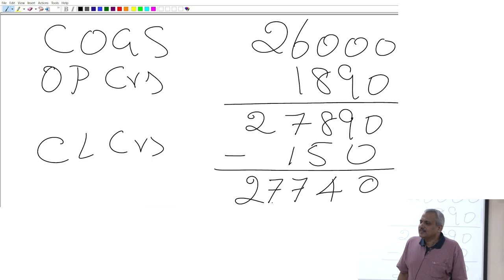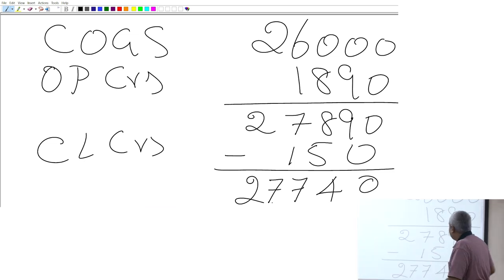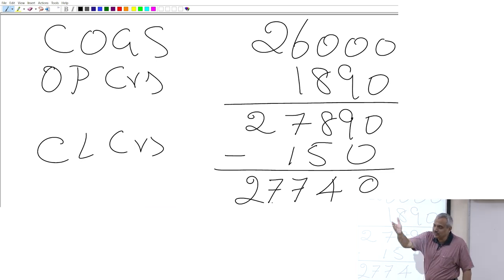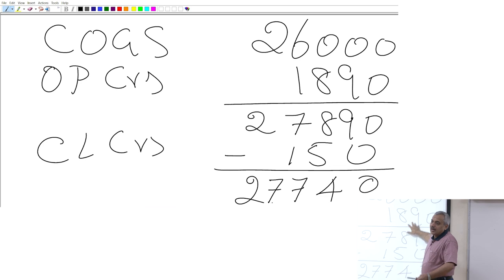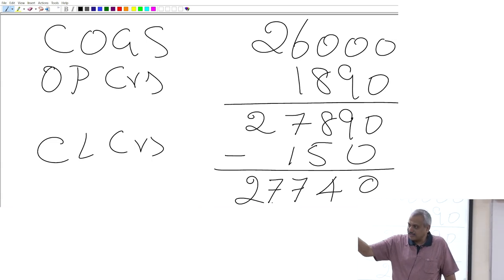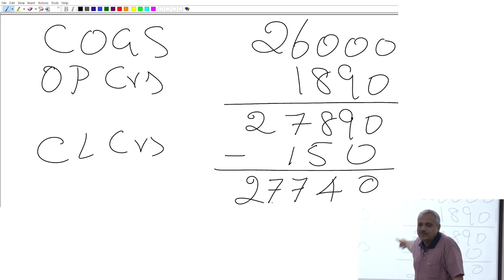This 150 in closing creditors may not even pertain to this year's sale — it might be a legacy from the opening creditors of 1,890 being carried forward. It is possible that this year's purchases were all cash, and the 150 still due is a carryforward from prior year creditors.